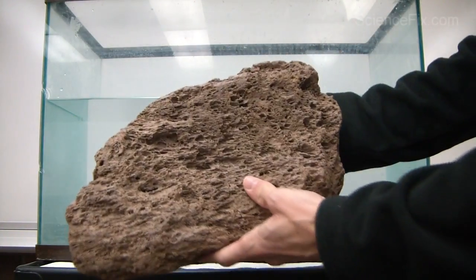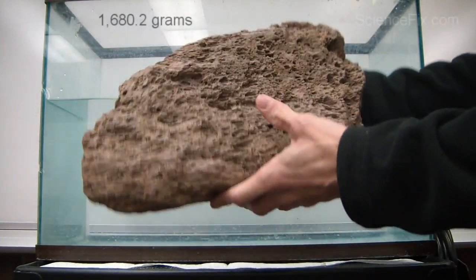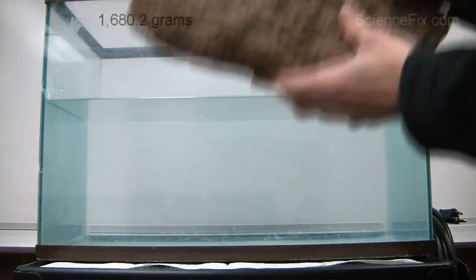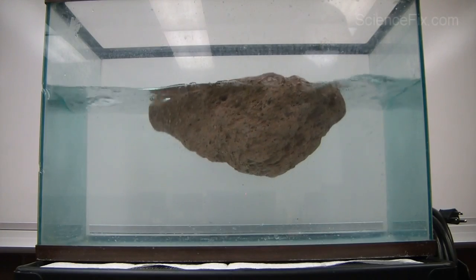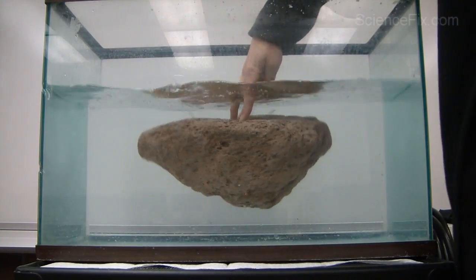The most massive object of all is the big rock with a mass of 1680.2 grams. It's placed in the tank of water, and it floats. Now you might be asking, well, it has holes in it. Of course it floats.